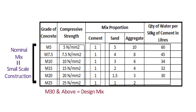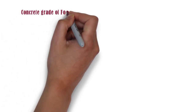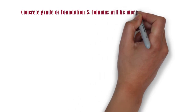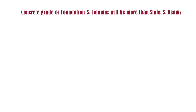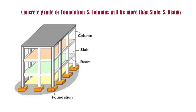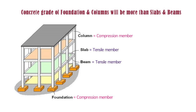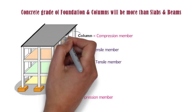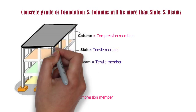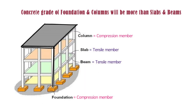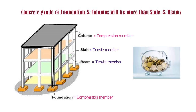In most cases, the concrete grade of foundations and columns will be more than that of slabs and beams — though this is not a general rule. Reason 1: foundations and columns are compression members, whereas beams and slabs are tensile members. Reason 2: the load is transferred from slabs to beams, beams to columns, and columns to foundations. Reason 3: it is economical to reduce the grade of concrete for slabs and beams.